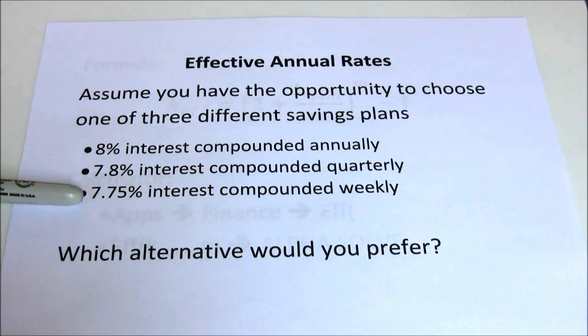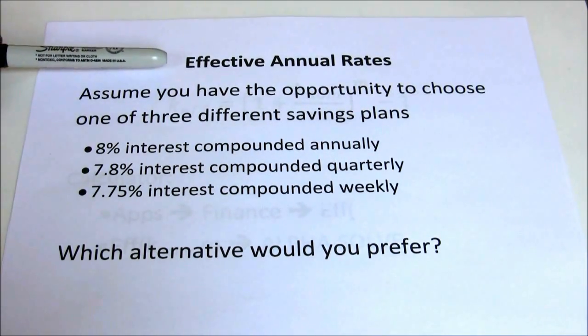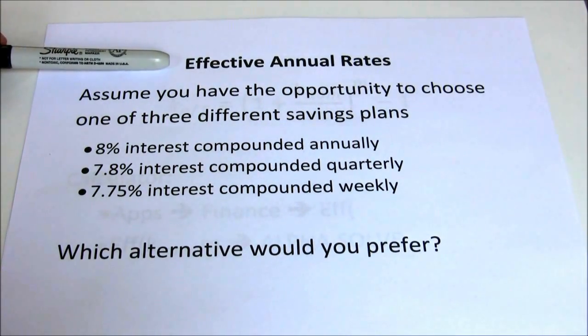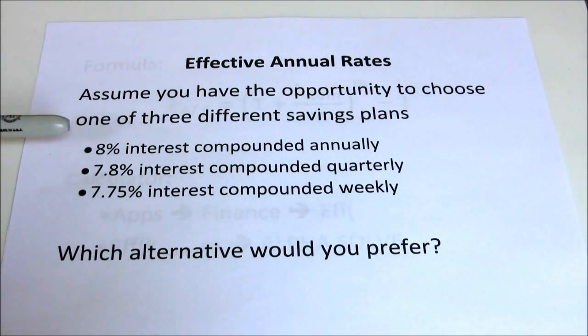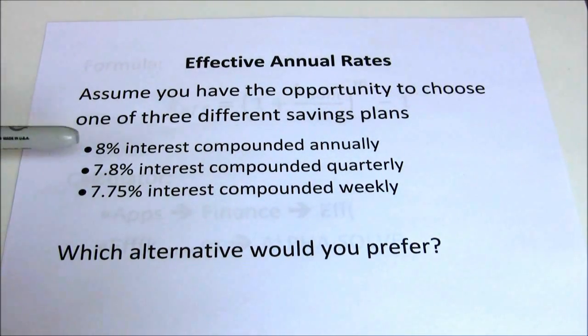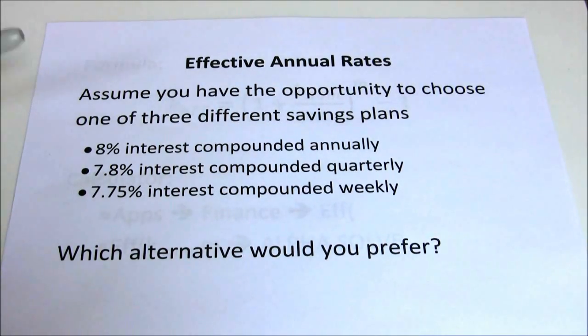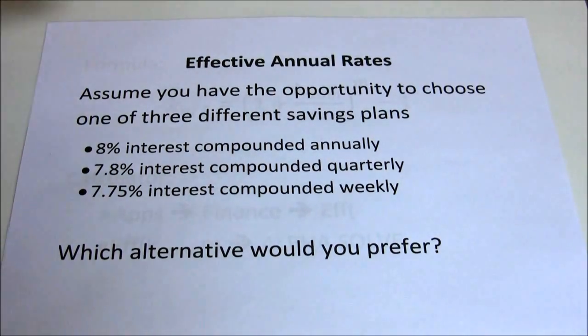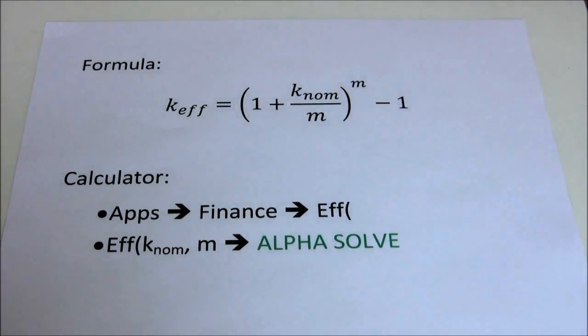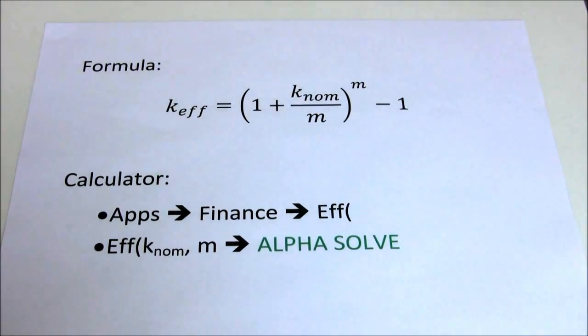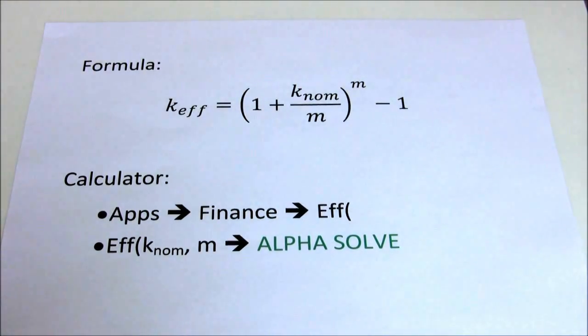In order to evaluate that we've got to move everything to its equivalent effective annual rate. Make comparison of apples to apples instead of apples to oranges. We've got to hold the compounding equal and then see which is a higher effective annual rate. There are two ways to do that. One is to use a formula and the other is to use a function in your financial calculator. I'm going to walk through both of those.